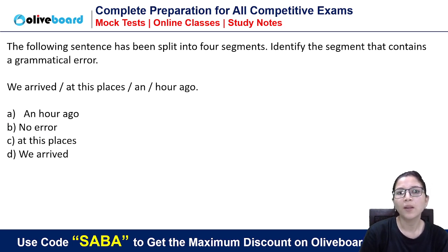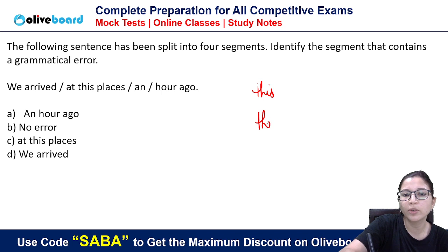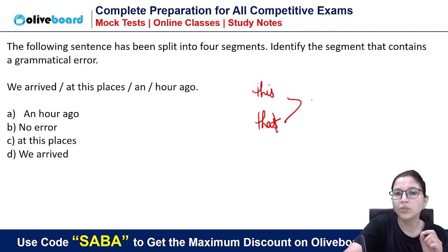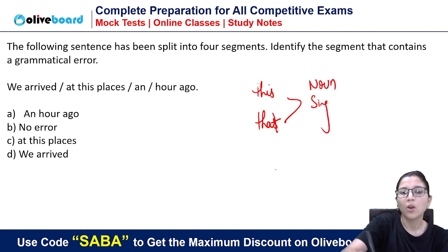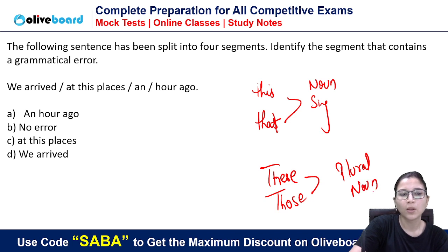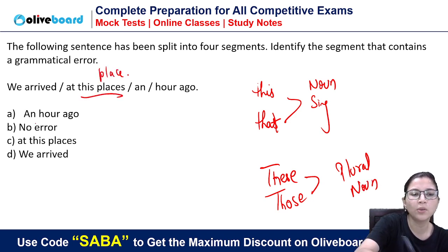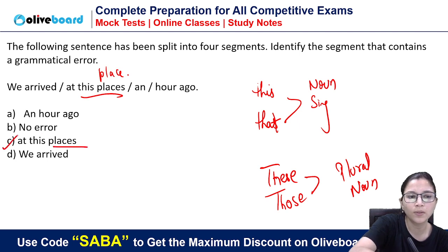Next: 'We arrived at this places an hour ago.' The error is very simple. As you know, 'this' and 'that' are followed by a singular noun, while 'these' and 'those' are followed by plural nouns. So the correct sentence is: 'We arrived at this place an hour ago.' 'Places' should be 'place.'